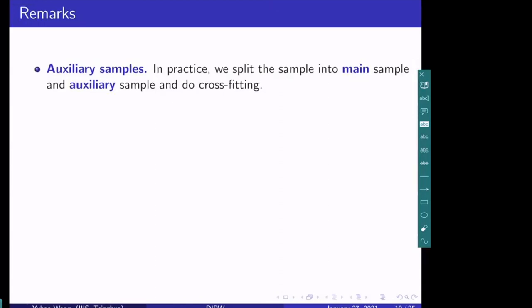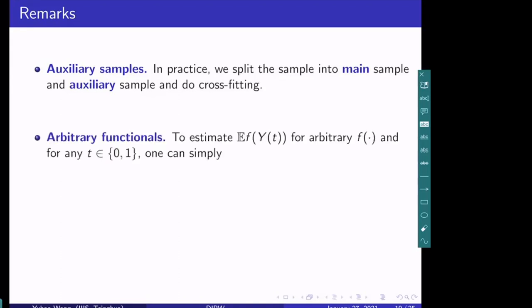A remark: our method requires auxiliary samples. However, in practice, we can split the entire sample into the main samples and the auxiliary samples using dual cross-fitting, which solves the problem of needing additional auxiliary samples. In addition, to estimate arbitrary functionals of the potential outcomes — such as E[F(Y_t)] for some arbitrary function F — one can simply set all Y's to F(Y) for individuals who received treatment T and set all other samples to zero, then apply the DIPW estimator.